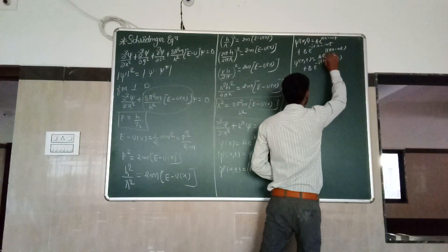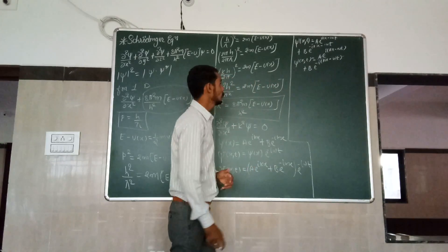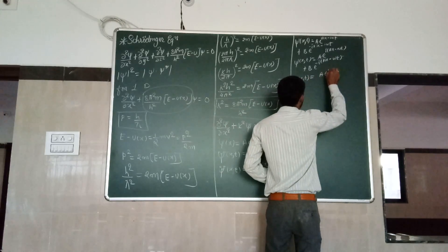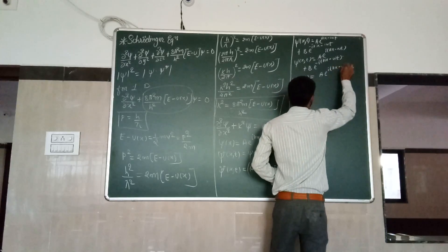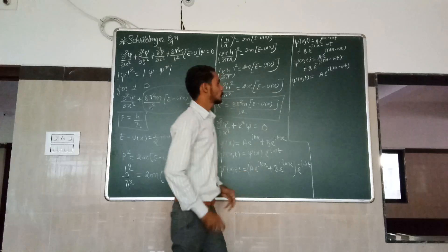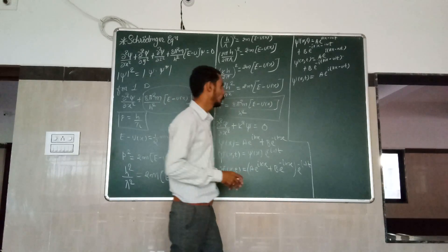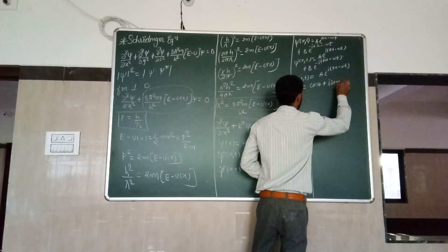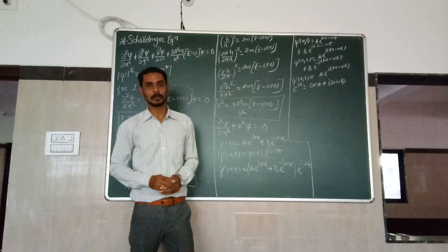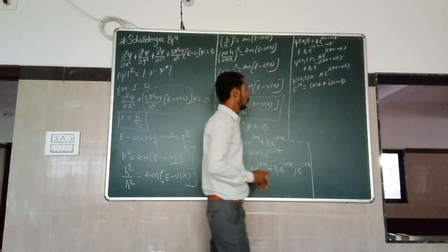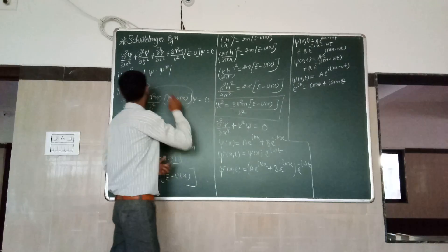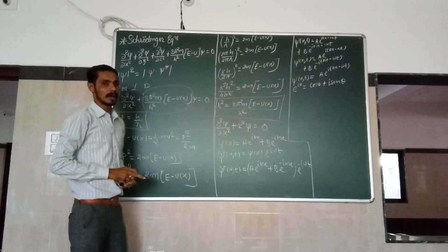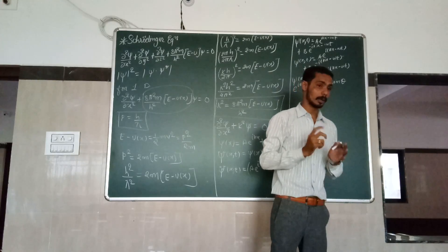So we have psi(x, t) equals A times e to the i(kx minus omega t). This is an exponential function which can be converted into a trigonometric function using Euler's formula: e to the i theta equals cos theta plus i sine theta. Generally we can convert this exponential form into a trigonometric function, but we need to find the magnitude of psi squared, which is real and positive, to help find the particle's position and detect it in matter waves.